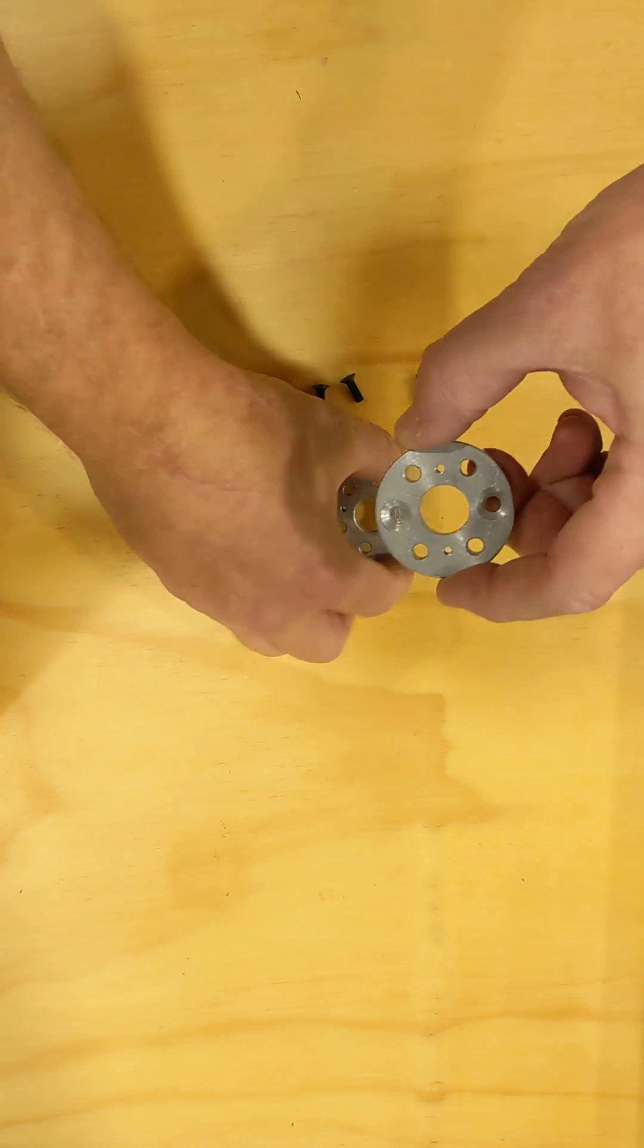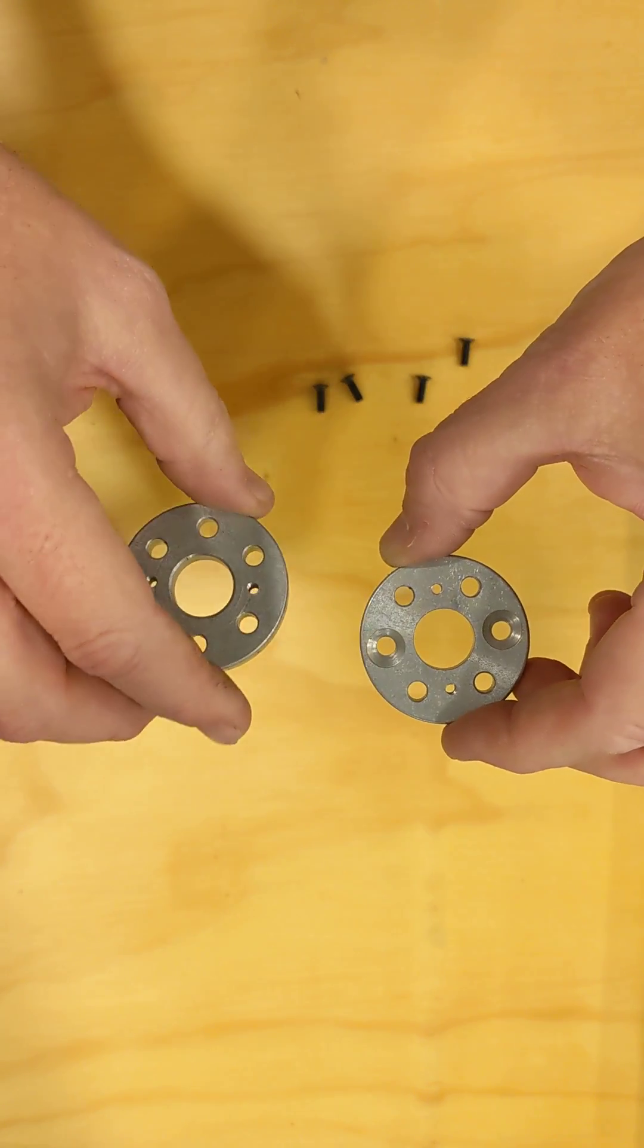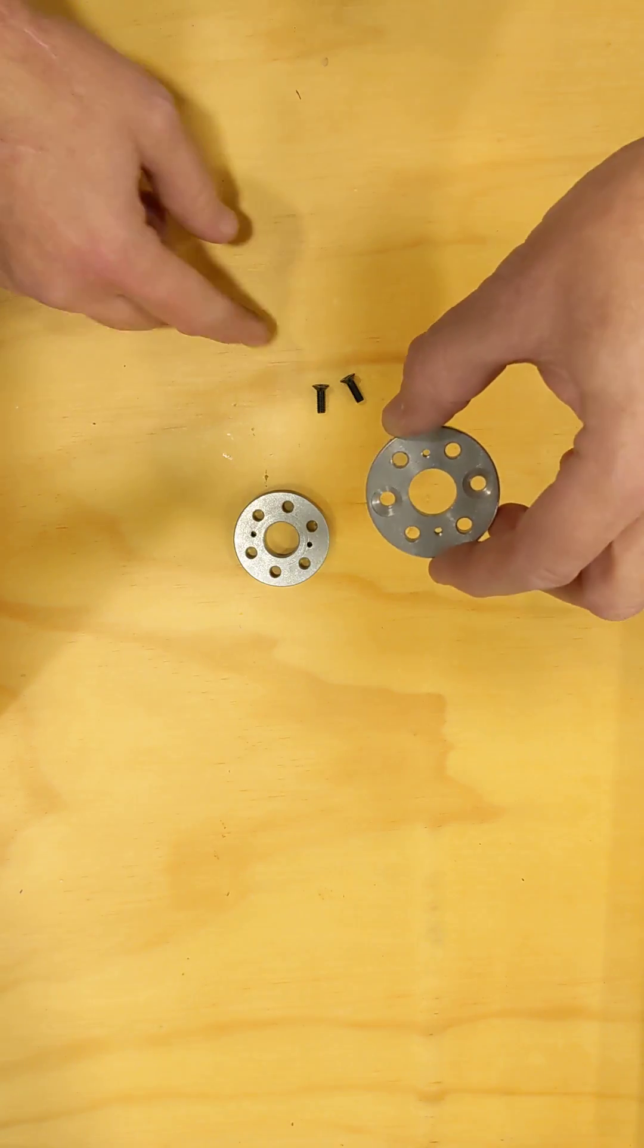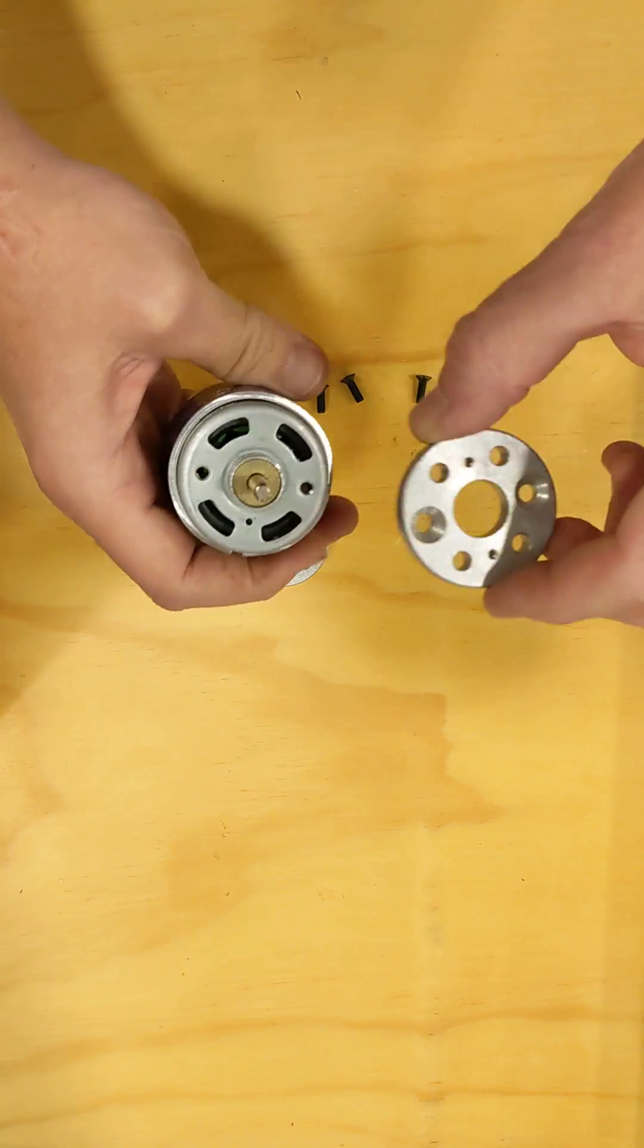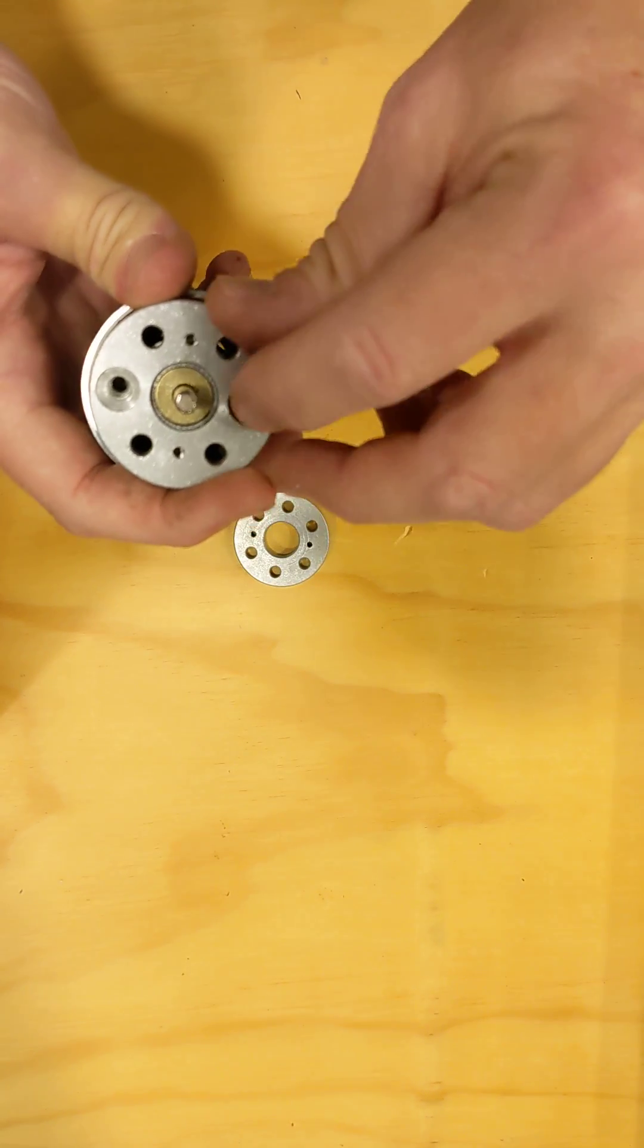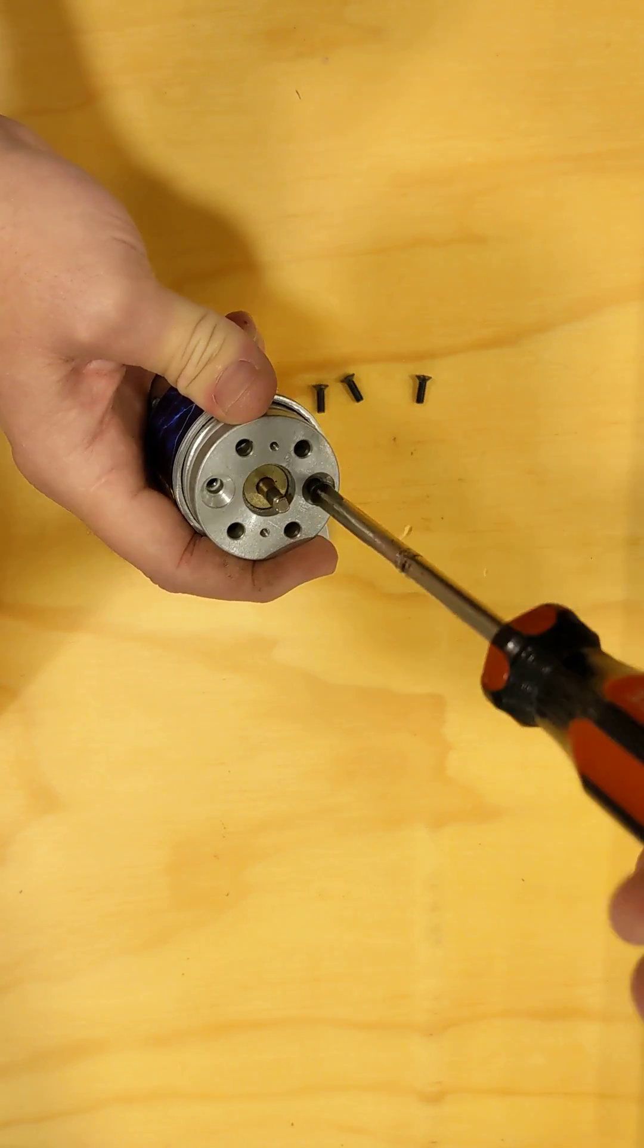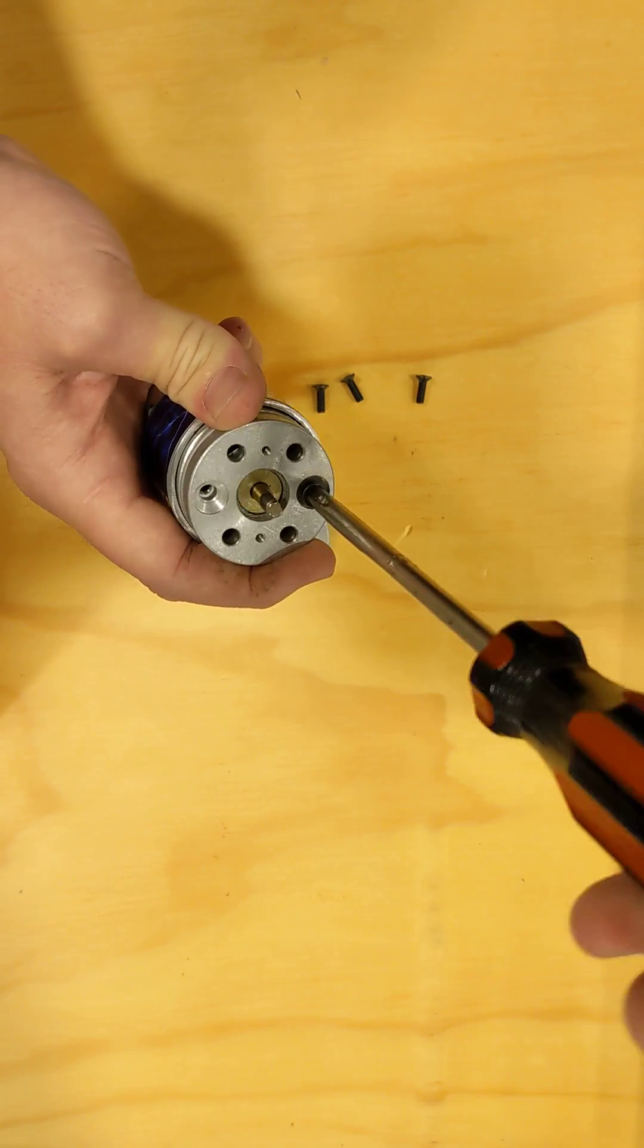These work really easily. The motor mounts, you'll notice that there's a countersunk set of holes on one side and then they're going to come with four screws. The countersunk holes are for the four screws. They're a larger size, four millimeter, and you'll just simply screw them onto the motor as so.